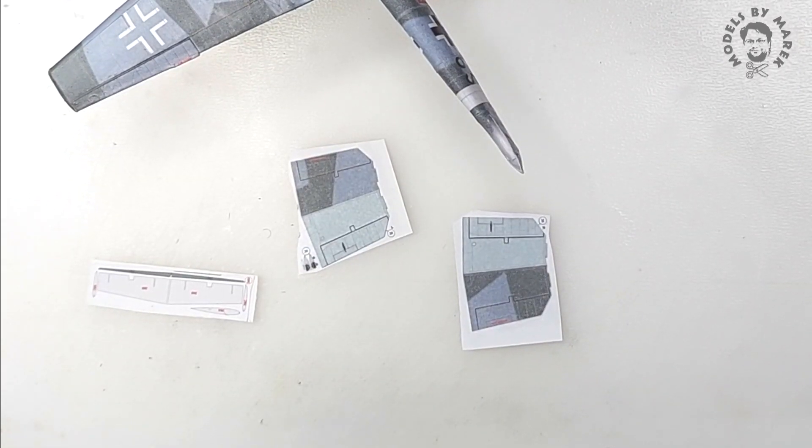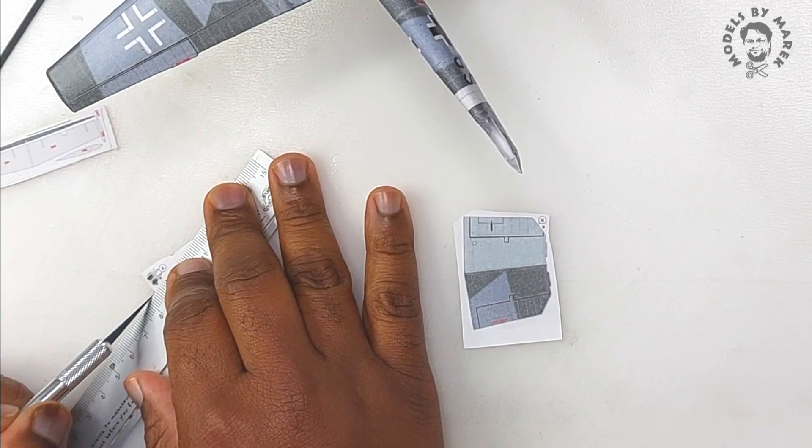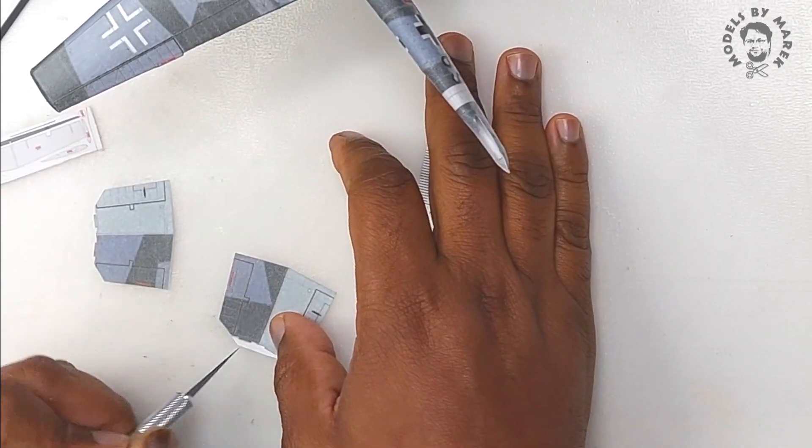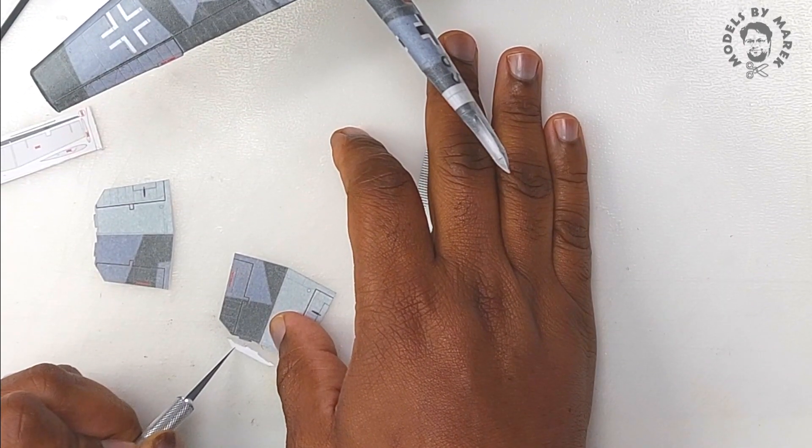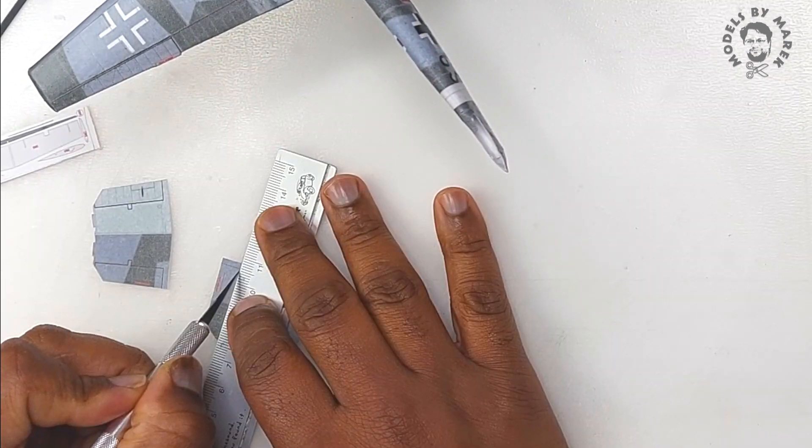So let's start with the elevator stabilizer. I decided why not make things more difficult for myself by cutting out the actual elevator, which you don't have to, and then rejoin it.